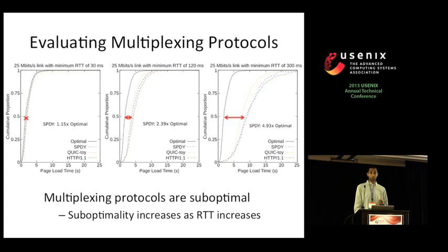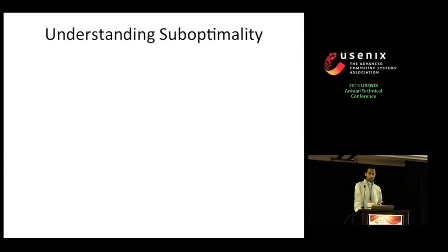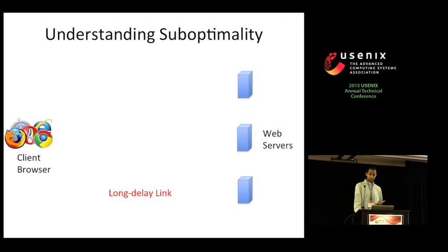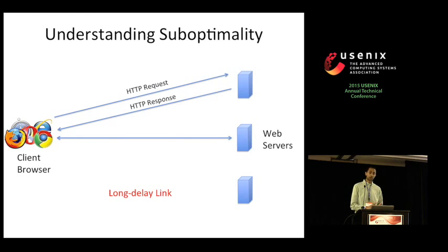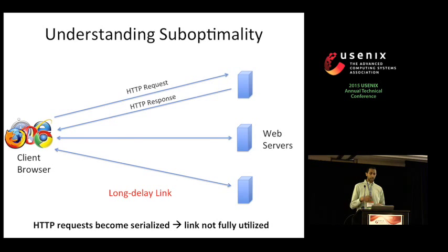To understand why, consider how a web page is loaded today. A client browser makes an initial HTTP request for a top-level HTML document and must wait an entire RTT for a response. After processing the HTML, it fetches images, JavaScript, and so on. This process of making a request, waiting, and making subsequent requests repeatedly occurs until the page is loaded — HTTP requests are effectively serialized, leading to underutilized links.